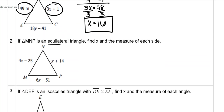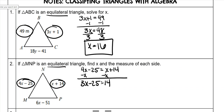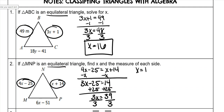On this one, it is also an equilateral, and it says to solve for x. It doesn't matter which two sides you choose — you choose any two sides and set them equal to each other. I will typically use the ones with the smaller numbers just because smaller numbers are usually easier. So 4x minus 25 is equal to x plus 14. Subtract x from both sides — 3x minus 25 equals 14. Add 25 to both sides — 3x equals 39. Divide both sides by 3, so x is 13.